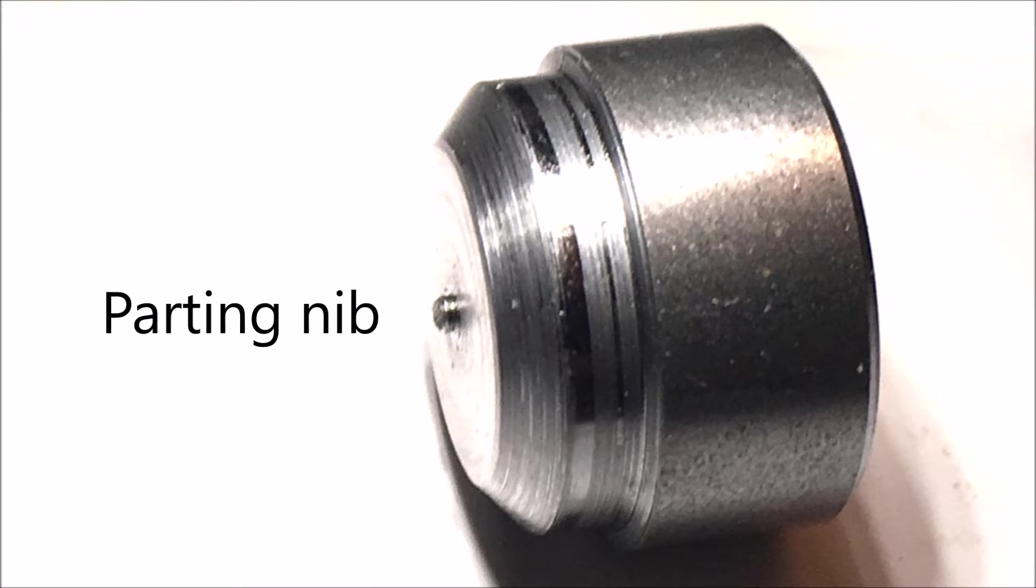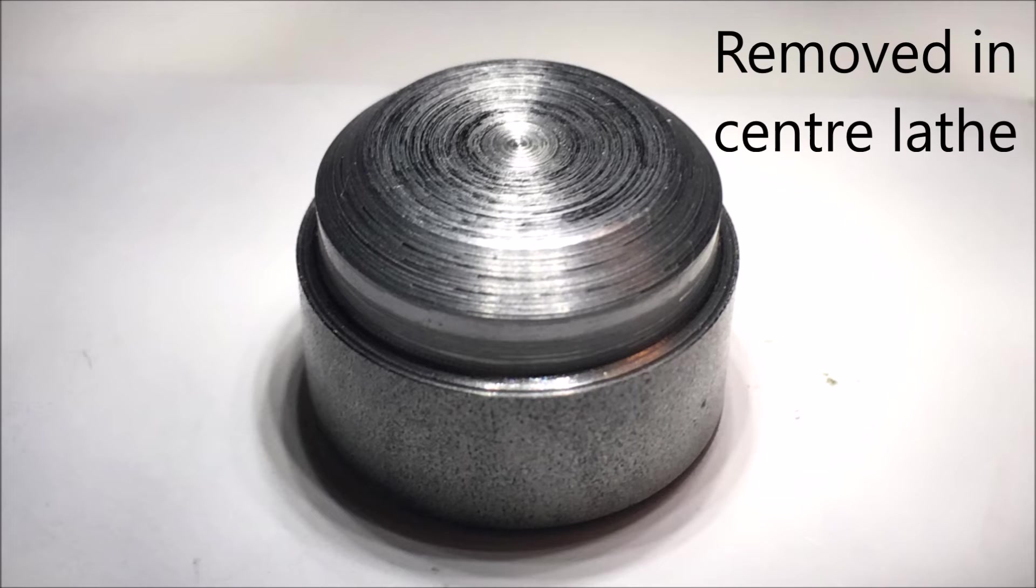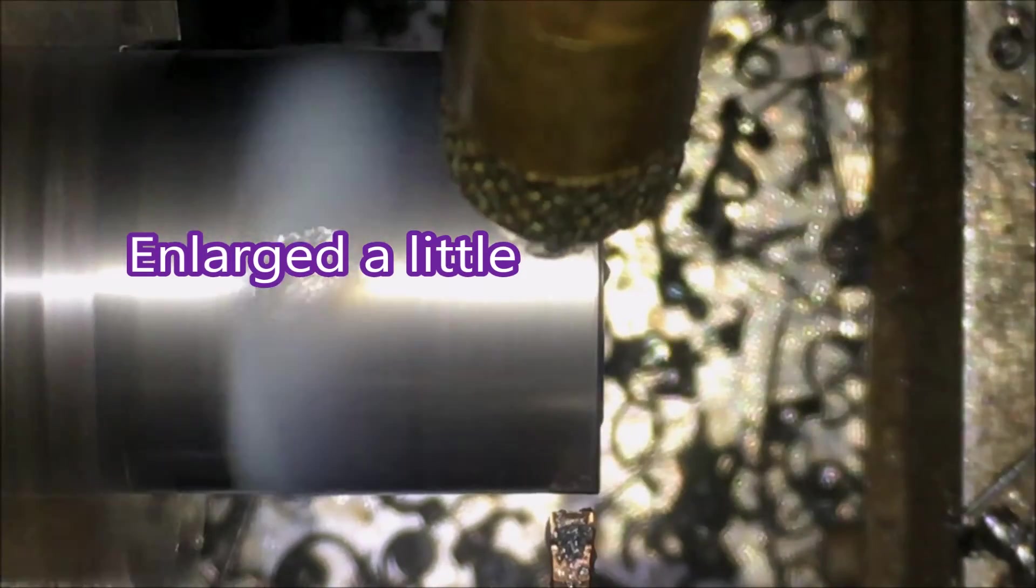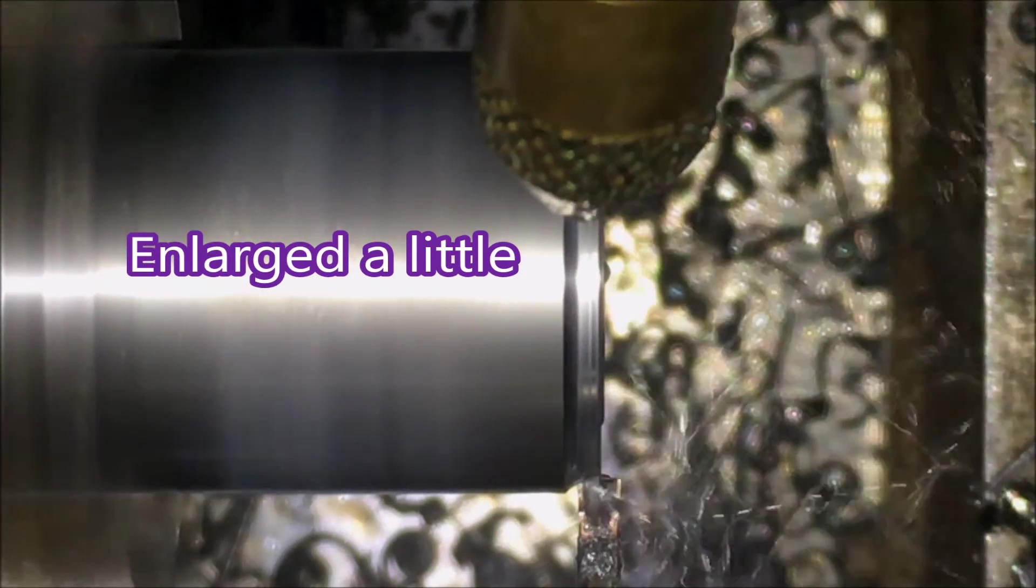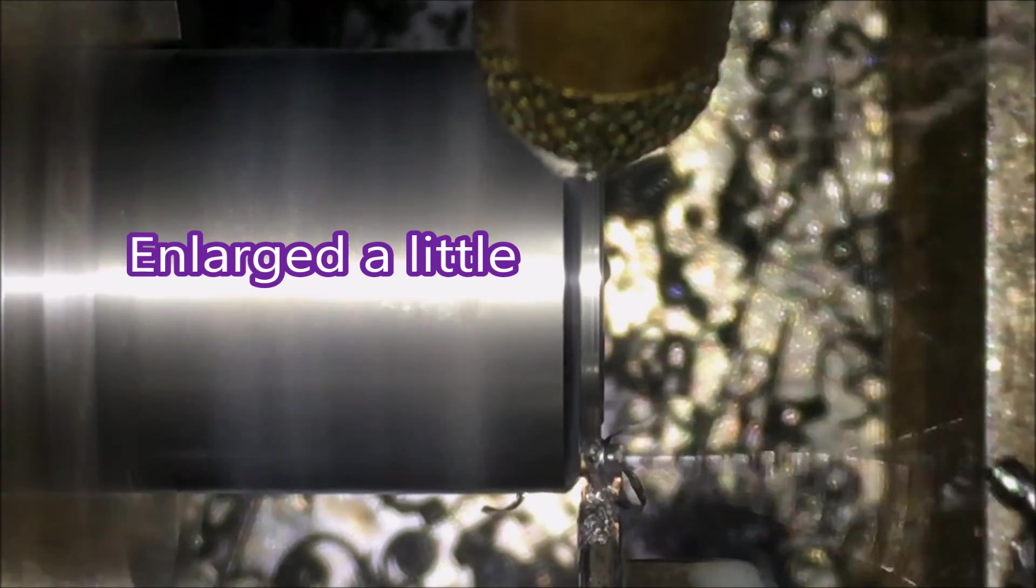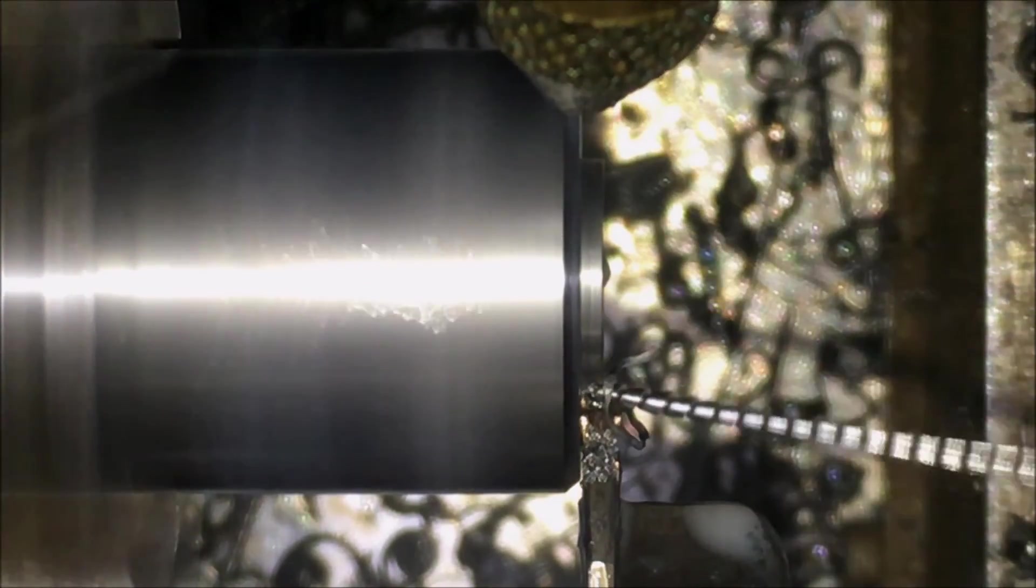There's a look at the part. You can see the finish is not brilliant. It's okay, but it's not brilliant. There's the parting nib that was left on the part, and I actually took that off, put them in the center lathe and just turned it off so that the part looked half decent. Right, here's the run through of a part being made.